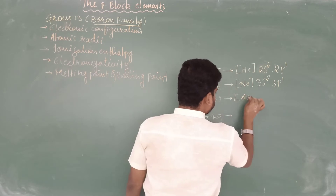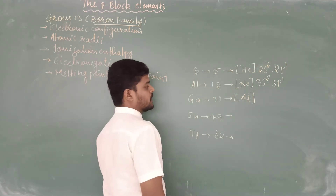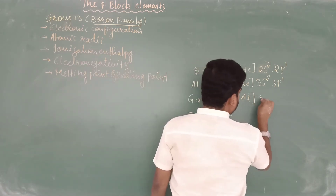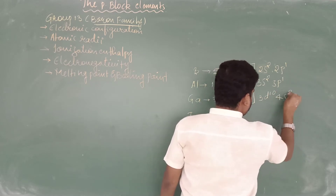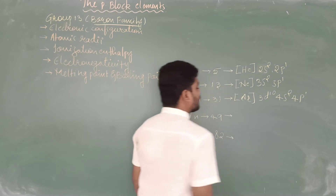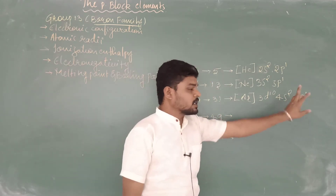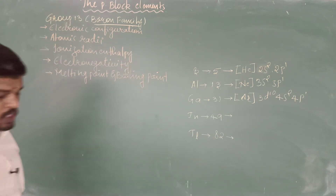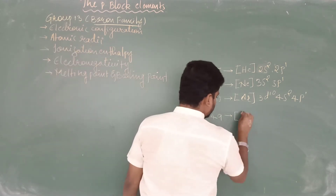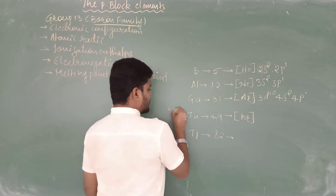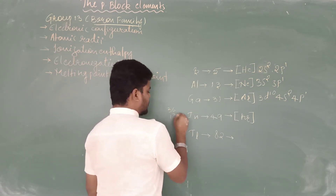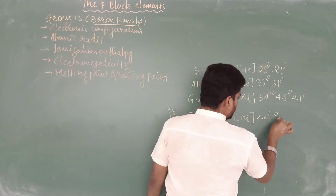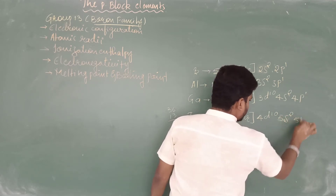For gallium, the noble gas is argon with atomic number 18. We are left with 13 electrons, which fill as 3d¹⁰ 4s² 4p¹, giving atomic number 18 + 10 + 3 = 31. For indium, the noble gas is krypton with atomic number 36, and again 13 electrons fill as 4d¹⁰ 5s² 5p¹.